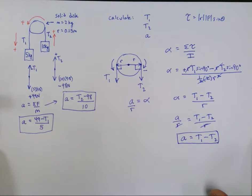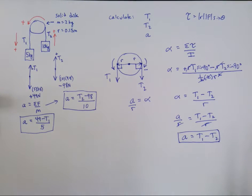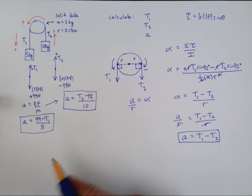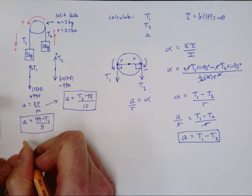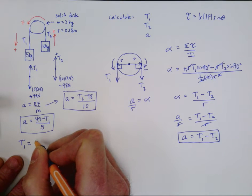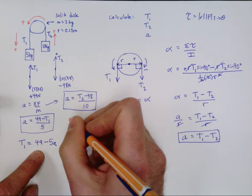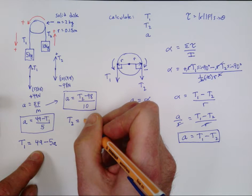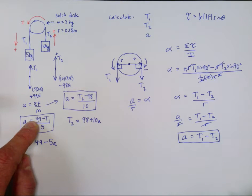Three equations, three unknowns — the rest is algebra. A useful strategy: the torque equation contains all three variables (a, T1, T2), while the other two each contain only two. Solve each of those two equations for the tension. From the 5 kg equation: T1 equals 49 minus 5a. From the 10 kg equation: T2 equals 98 plus 10a.